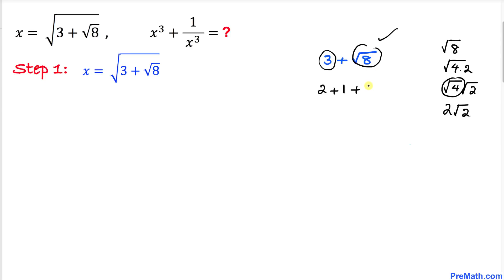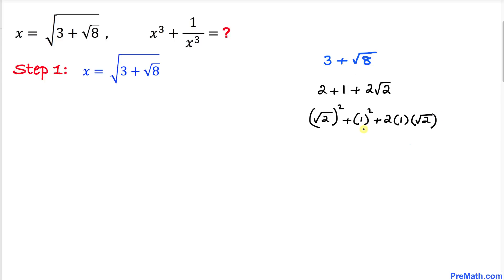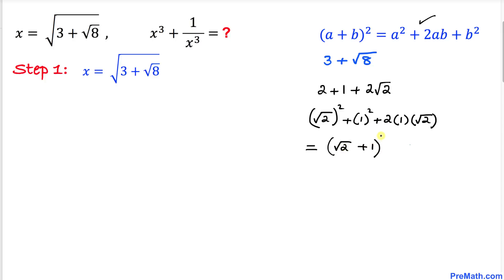Now let's tweak these terms. The 2 can be written as (√2)², the 1 can be written as 1², and the middle term becomes 2 times 1 times √2. Using the well-known perfect square formula, the entire expression inside the radical becomes (√2 + 1)².